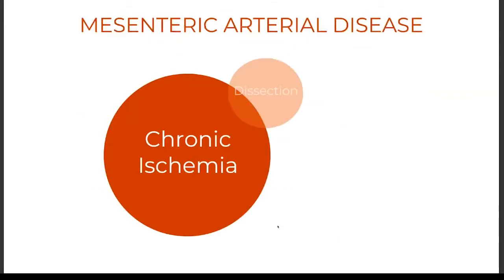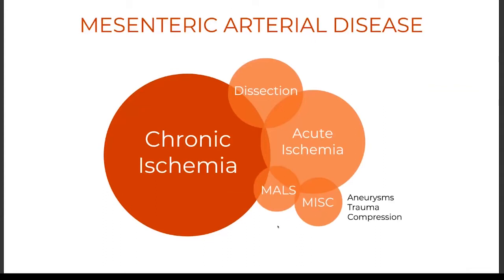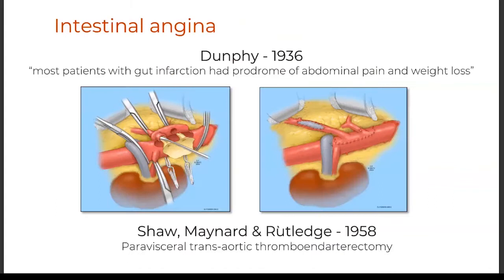Mesenteric arterial disease is a quite wide spectrum that goes from acute to chronic ischemia and involves more than one disease process. Today I want to focus on chronic and acute mesenteric ischemia, and I'm not going to go at length on issues such as dissection, median arcuate ligament syndrome, and aneurysms, but we can discuss that later.